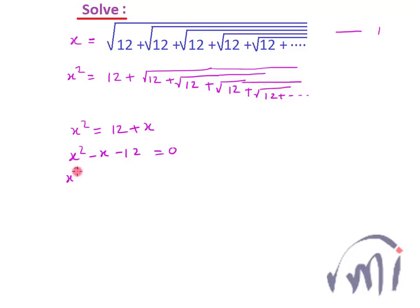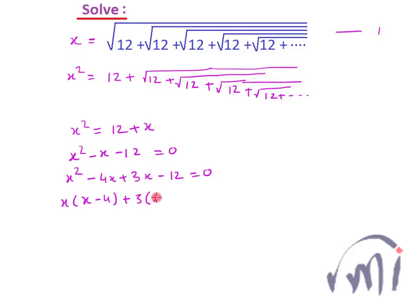So this can be written as x squared minus 4x plus 3x minus 12 is equal to zero. Taking x common from the first two terms gives x times (x minus 4), and taking 3 common from the last two terms gives 3 times (x minus 4). So taking (x minus 4) common, we get (x minus 4)(x plus 3) equals zero.